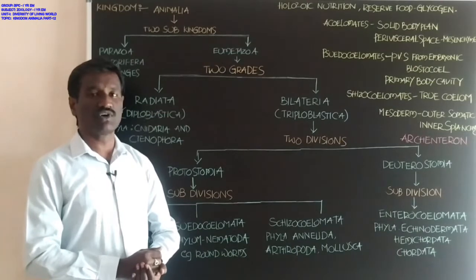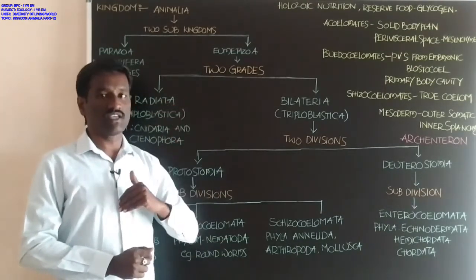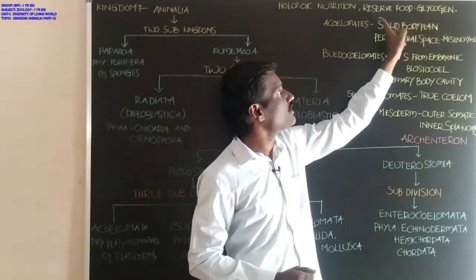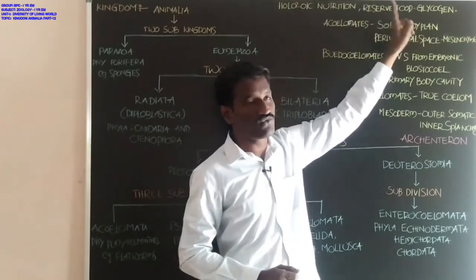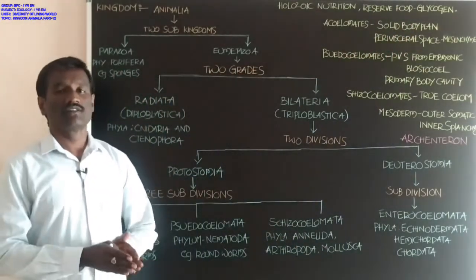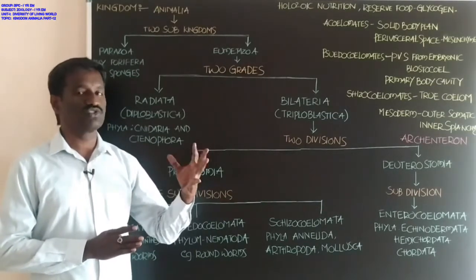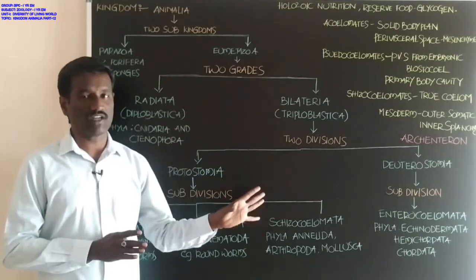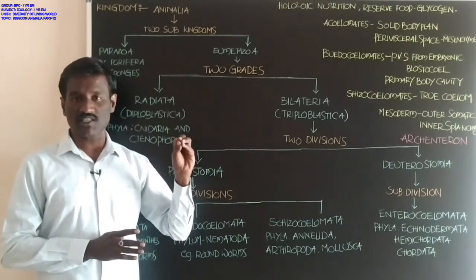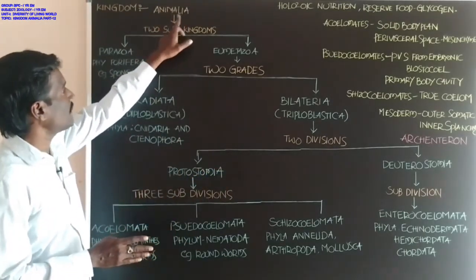Excess food in these organisms is stored in body cells in the form of glycogen. Glycogen is the reserved, stored food. These animals go to reproduction, mostly by the sexual method. Asexual reproduction is also possible in some animals.